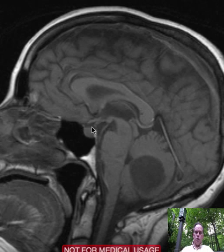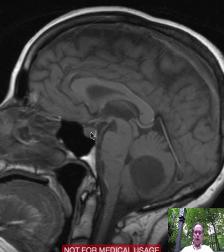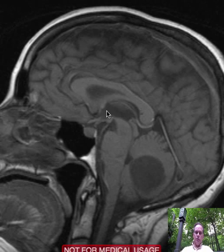We'll look first here in this area. What is this structure right here? It's a sella turcica containing the pituitary gland. And here is the pituitary infundibulum, which leads from the hypothalamus — the hypothalamus being located in the walls of the third ventricle, this being the third ventricle.